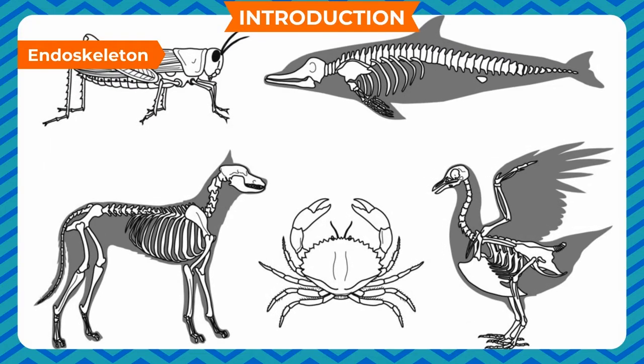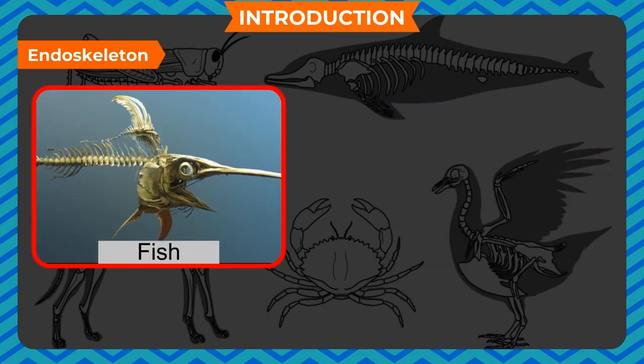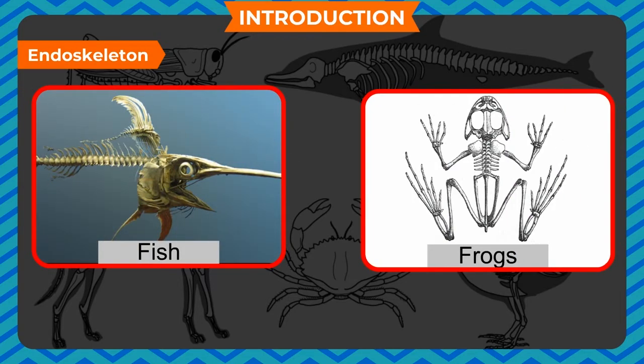Endoskeleton: The hard skeletal framework present inside the body is called endoskeleton. It is formed of cartilages or bones or both. In birds and mammals, the endoskeleton is bony. In fishes and frogs, the endoskeleton is made of both cartilages and bones.